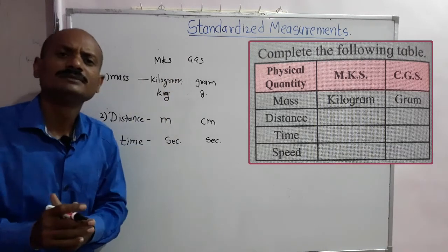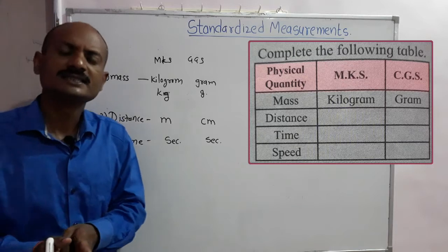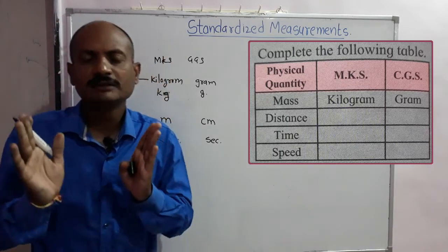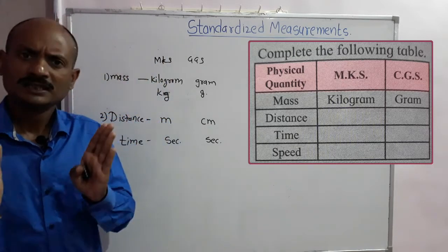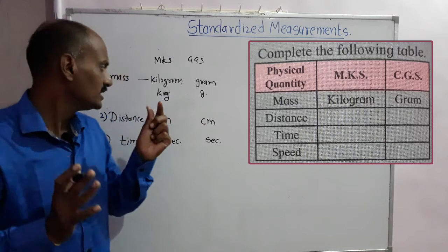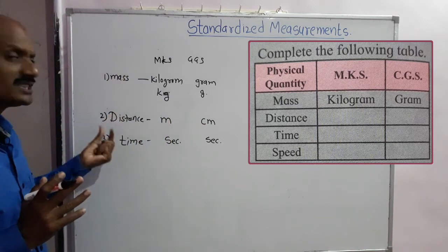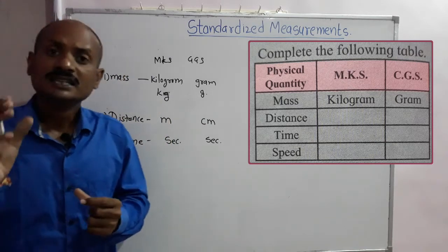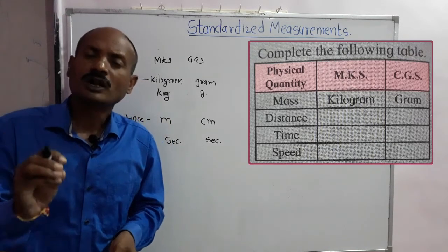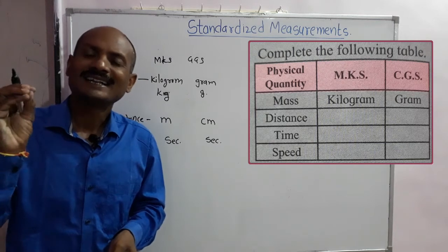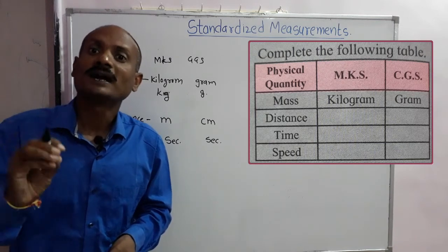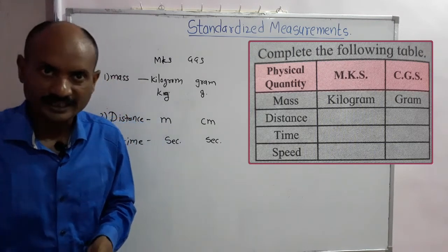So in both the MKS and CGS systems, mass, distance, and time are accepted as fundamental quantities.